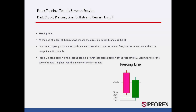Piercing Line forms in a downtrend, opposite to the Dark Cloud pattern. It indicates a reversal trend in a declining direction. Like Dark Cloud, the Piercing Line pattern consists of two candles. It may form when a significant news or event changes the downward direction of the trend to an upward one. The open and low price of the second candle is lower than the close and low price of the first candle, respectively.